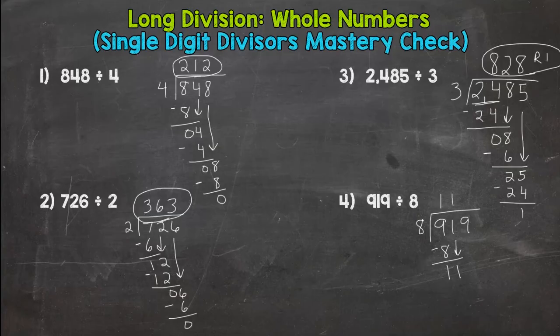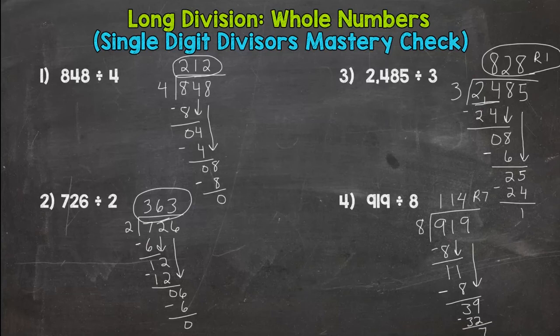One. One times 8 is 8. Subtract, we get 3. Bring down this 9. How many groups of 8, 8 out of 39? Eight, 16, 24, 32, and then 8 times 5 would be 40. So a little bit too much. So only 4 groups of 8 out of 39, and that gives us 32. Subtract, we get a remainder of 7. So 114 remainder 7.